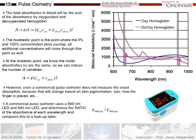The total absorption of the blood will be the sum of the absorbance of the oxygenated and deoxygenated components — total absorbance equals the oxygenated concentration term plus the deoxygenated concentration term, times the path length. What we can do is go to the isobestic point where the curves overlap, where the 0% and 100% concentration plots exactly overlap. At that point, the molar absorptivities are the same, so instead of having epsilon-oxy and epsilon-deox, we can use just one epsilon and simplify our variables.